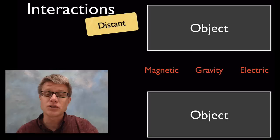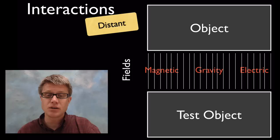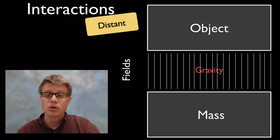But sometimes objects are separated — at a distance — and we can still have interactions. Those are magnetic, gravitational, and electric. What causes them are called fields: invisible fields that move out from each of those objects.